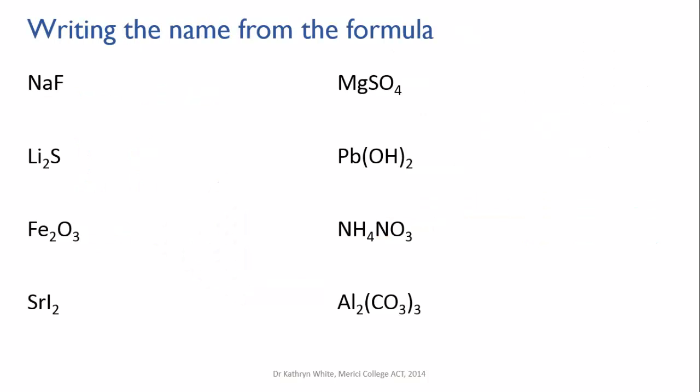In naming ionic compounds you need to get comfortable with two things. You need to be able to write the name of the compound by looking at its formula and you need to be able to write the formula of the compound from its name. Let's do writing the name from the formula first. It's relatively easy. All you need to be able to do is recognize the ions in the formula and know their names.